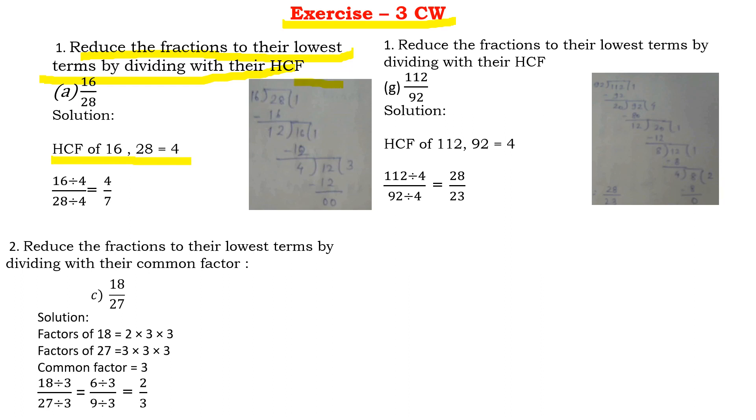I am using the long division method here and I got the HCF as 4. So the HCF of 16 and 28 is 4. So what I will do when I got HCF as 4 I will divide numerator by 4 and denominator by 4. So 16 by 4 will be a 4 and 28 by 4 will be a 7. So your answer is 4 by 7.